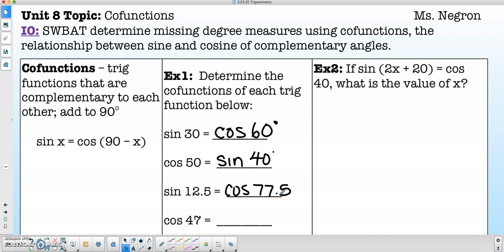For the last one here, cosine of 47, the co-function will be sine. And then 90 minus 47 is 43 degrees.